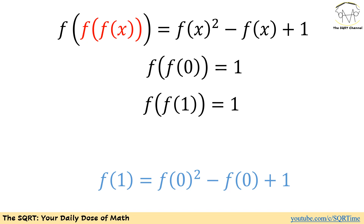The first thing is we know f of f of 0 is equal to 1. So if we replace f of f of 0 on the left hand side of our equation, we will end up with f of 1, and on the right hand side using x equals 0 we will have f of 0 squared minus f of 0 plus 1. We have f of 0, the thing we wanted to find, but unfortunately we don't know f of 1.